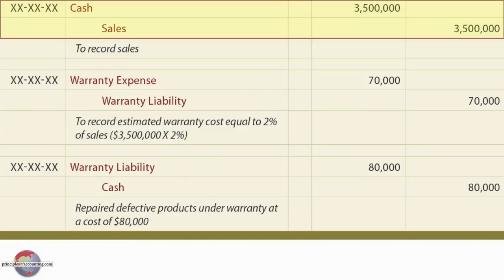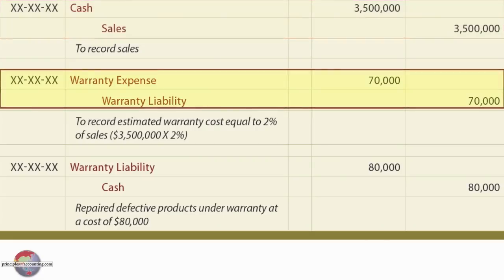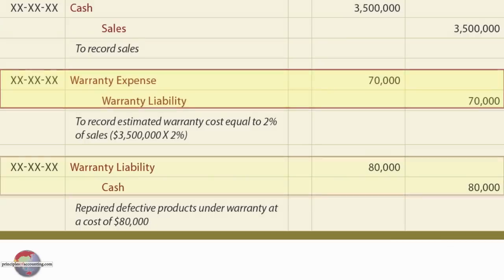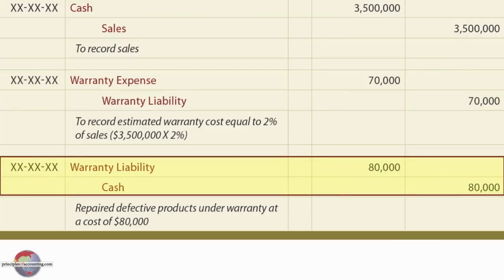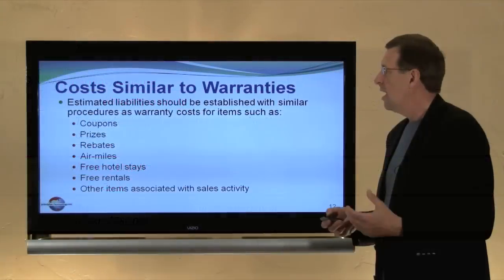Here are the journal entries. For sales: debit cash, credit sales, $3,500,000. Simultaneously with recording the sales, we debit warranty expense and credit warranty liability — that's 2% of sales, or $70,000. As the work is done throughout the period, we credit cash and debit the warranty liability account for $80,000.